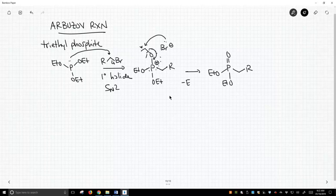Now, we also lose ethyl bromide, but we're normally not concerned about that, so we're going to ignore that and focus on this thing over here. This is called a phosphonate ester.